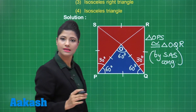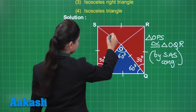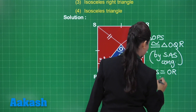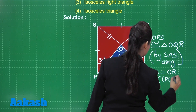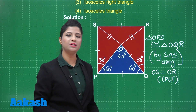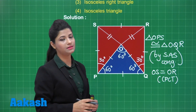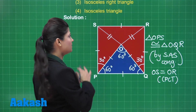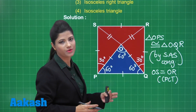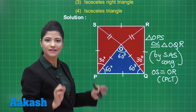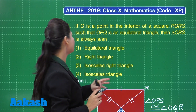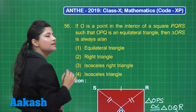Since the triangles are congruent, their corresponding parts are equal. That means OS equals OR by CPCT — corresponding parts of congruent triangles. Now, since OS equals OR, triangle ORS has two equal sides, which means triangle ORS is definitely an isosceles triangle. We cannot determine from this information alone whether it is a right isosceles triangle, but it is certainly isosceles.